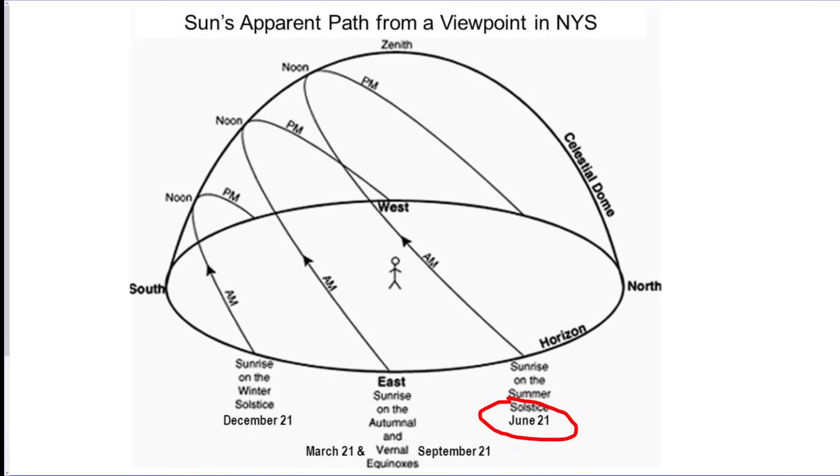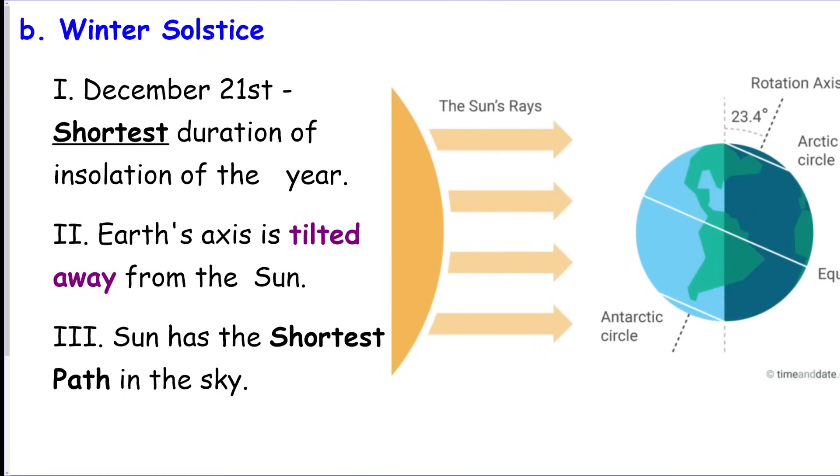So this is what New York State's celestial sphere diagram looks like. You're going to have to know celestial sphere diagrams, so again, if you forgot this, go check out my video on spheres.